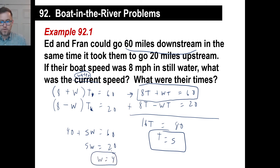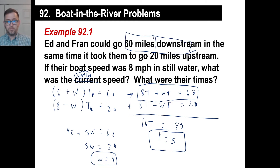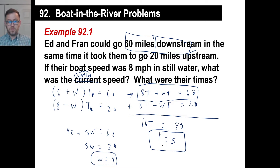Let's check: if the boat speed is 8 and the water speed is 4, going downstream you're going 12 miles an hour. In 5 hours at 12 miles an hour, you go 60 miles downstream. Going upstream at 8 minus 4 = 4 miles an hour, in 5 hours you go 20 miles. That's our check — there you go.